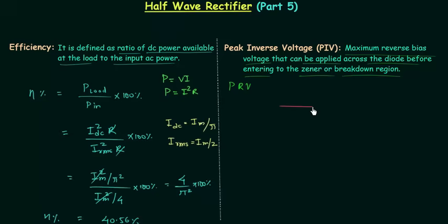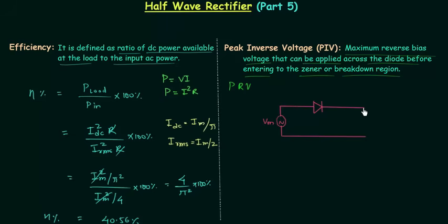I will quickly draw the circuit of the half wave rectifier so that we can calculate the peak inverse voltage of the diode used. This is the diode that we are using and we have to calculate its peak inverse voltage. I will connect the source. The maximum voltage or the peak voltage of the source is equal to Vm, and load resistance is equal to R. This is diode D, and to obtain the PIV the diode must be reverse biased.